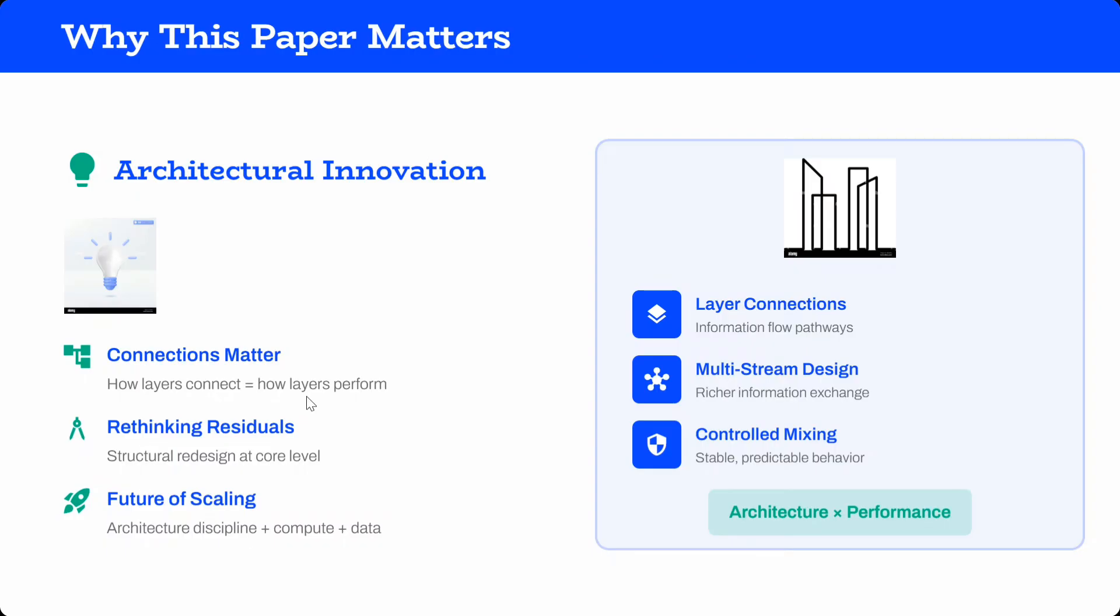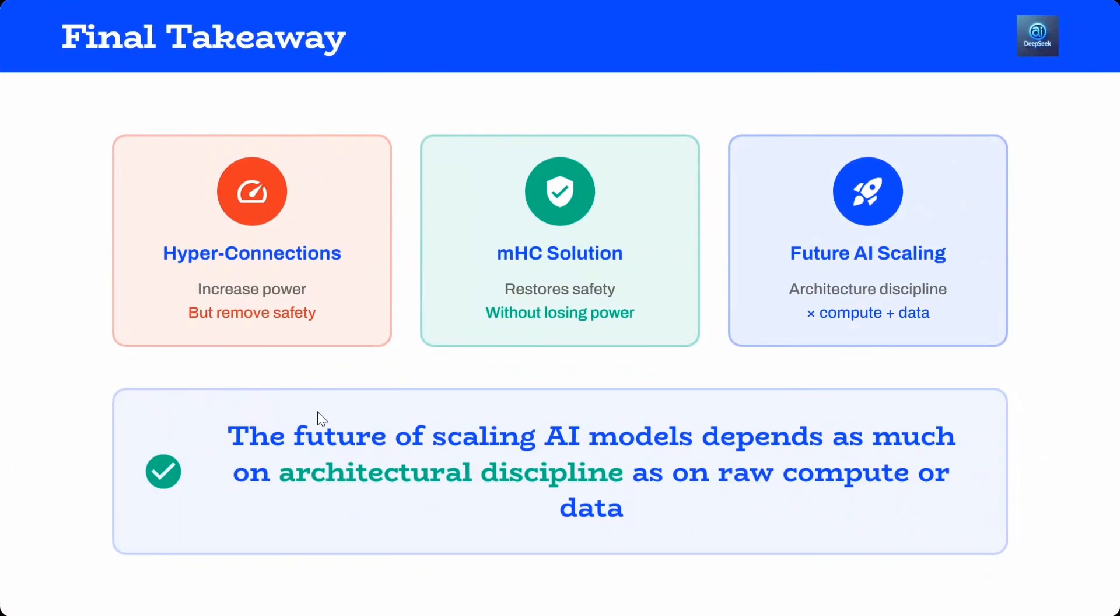Final takeaway: hyper connections increase power but remove safety because they can go to any constraint, scale from zero to one hundred thousand - you want some clipping. MHC solution: restore safety without losing power. Future AI scaling is architectural discipline in compute plus data. This is what DeepSeek has released. I've tried to explain in simple terms - do read the paper, it's very interesting. They're going into core architecture rather than releasing LLMs, which is quite great. Thank you so much.